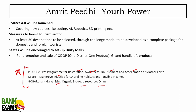Pradhan Mantri Kaushal Vikas 4.0 is to be launched, teaching coding, AI, robotics, and 3D printing. For the tourism sector, at least 50 destinations are to be selected through challenge mode and developed as complete packages for domestic and foreign tourists. States will be encouraged to set up unity malls for promotion and sale under the One District One Product plan for handicrafts and geographic indication products.